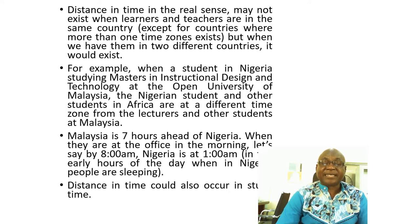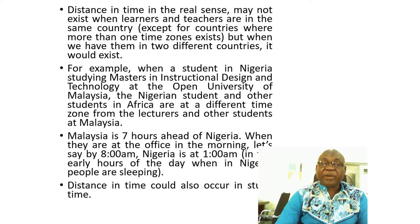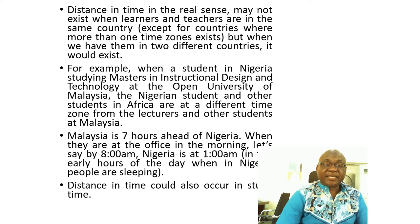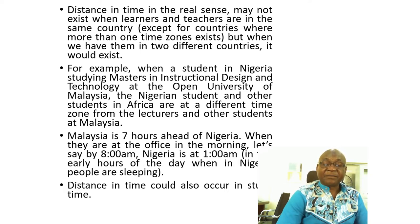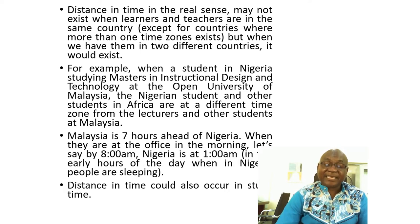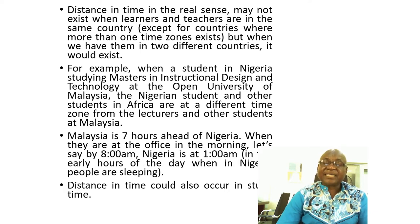Distance in time, in the real sense, may not exist when learners and teachers are in the same country, except for countries where more than one time zone exists. But where they are in two different countries, it is likely to exist. For example, a student in Nigeria studying in Malaysia would not be at the same time as the students and lecturers in Malaysia, because Malaysia is seven hours ahead of Nigeria — when they are at the office around 8 a.m., Nigeria will be at 1 a.m. where people are still sleeping. Distance in time could also occur at the time students access their learning materials, even within the same country.